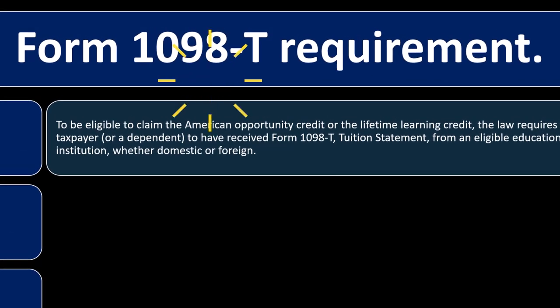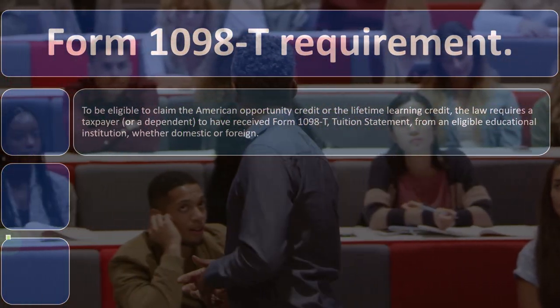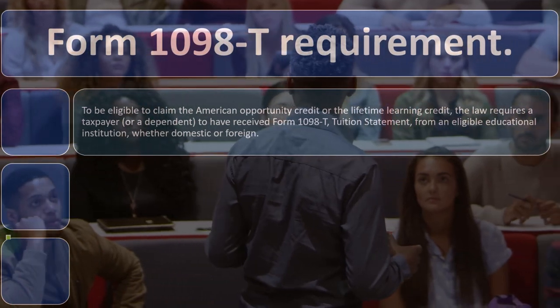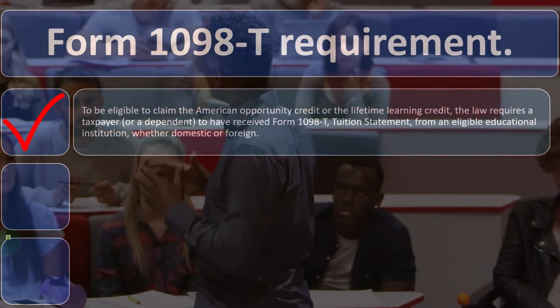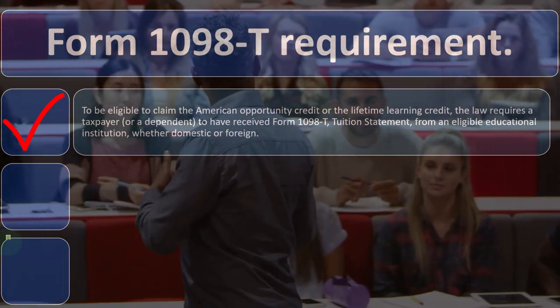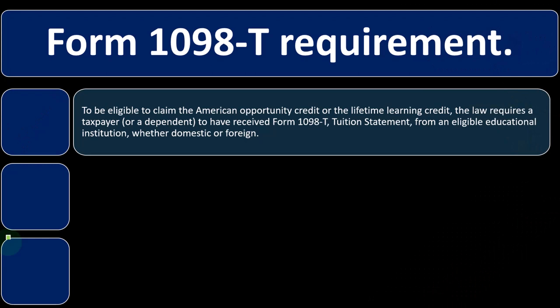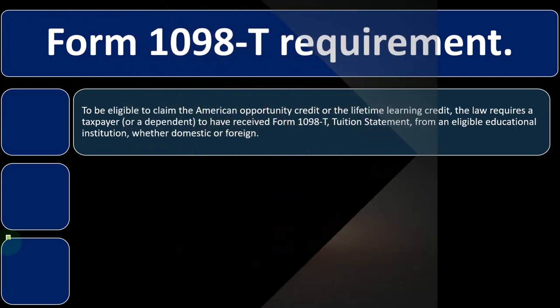Then there's the Form 1098-T requirement. That's the form the financial department of the educational institution will typically give you, reflecting payments — usually tuition. To be eligible to claim the American Opportunity Credit or Lifetime Learning Credit, the law requires taxpayers or a dependent to have received Form 1098-T, the tuition statement, from an eligible educational institution, whether domestic or foreign. It's similar to a W-2 — the institution provides it to you, and also sends it to the government so they can double-check.